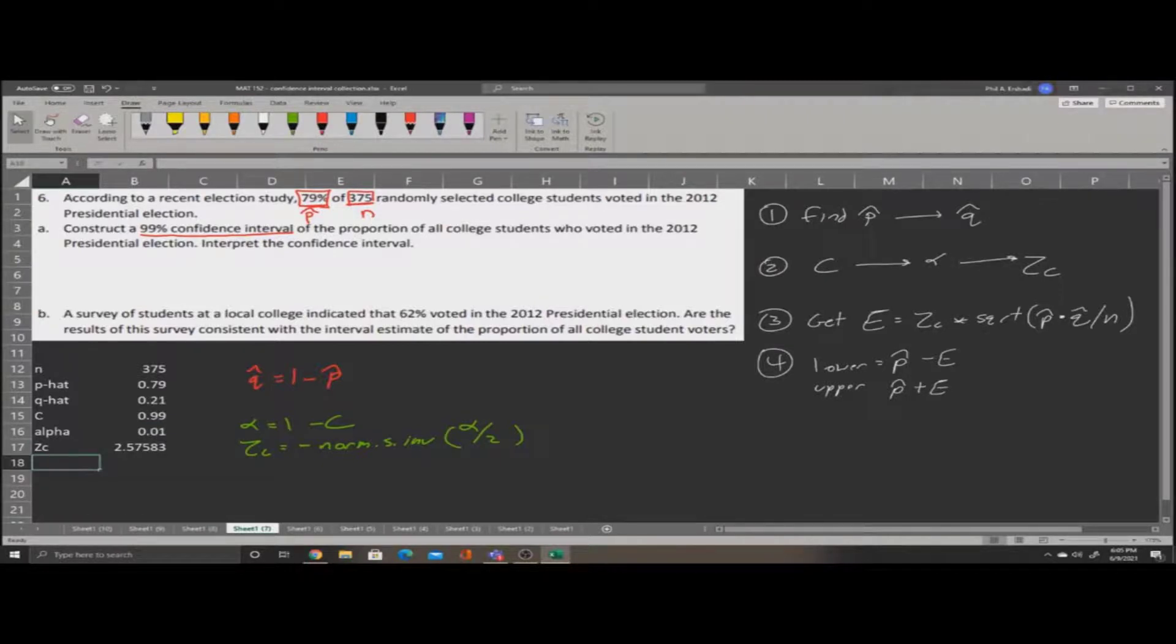Now we've gathered up all the ingredients we need to get error. To calculate error, we say z-critical times square root of p-hat times q-hat divide by n. So let's try this, equals z-critical, multiply square root, p-hat multiply by q-hat divide by n. Close the parentheses and press enter. This gives us our error.